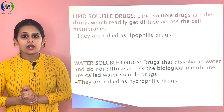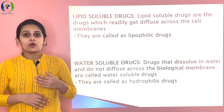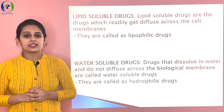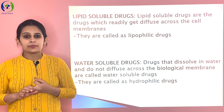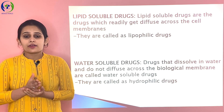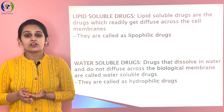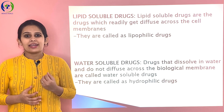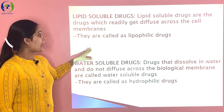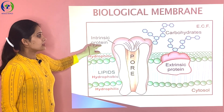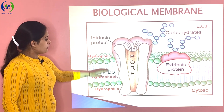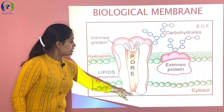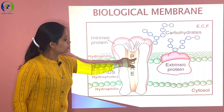The second concept is about lipid soluble drugs and water soluble drugs. Lipid soluble drugs are those which can diffuse through or pass the lipid membrane very easily; they are also called lipophilic drugs — for example propranolol, metoprolol, diazepam. Water soluble drugs are those which cannot diffuse through the lipid membrane; they are soluble in water — for example atenolol. If a lipid soluble drug is present in the extracellular fluid, it will directly diffuse through the phospholipid membrane into the cell.